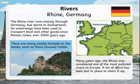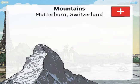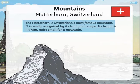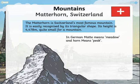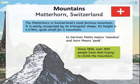If you don't want to study rivers, you could think about mountains. Here's an example: the Matterhorn in Switzerland. The Matterhorn is Switzerland's most famous mountain, easily recognised by its triangular shape. Its height is 4,478 metres — quite small for a mountain. In German, 'matt' means meadow and 'horn' means peak. Since 1856, over 500 people have died trying to climb the mountain.